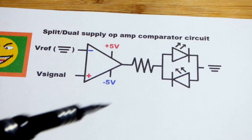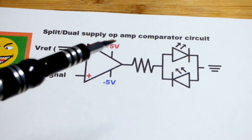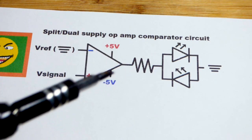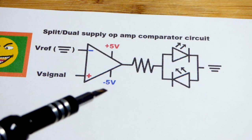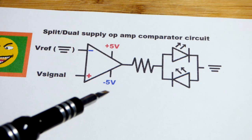In this video we're going to be making a comparator circuit from an op-amp, a pretty basic circuit, but this time we're going to use a split power supply. You can see I got positive 5 volts and negative 5 volts.